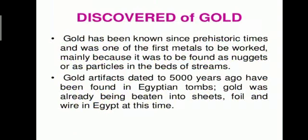What is gold? Gold has been known since prehistoric times and was one of the first metals to be worked, mainly because it was found as nuggets or as particles in the beds of streams. Gold has been used to make ornamental objects and jewellery for thousands of years. Special properties of gold like very high luster, attractive color, inertness, tarnish resistivity, ability to be drawn into wires, hammered into sheets or cast into shapes make it perfect for manufacturing of jewellery.